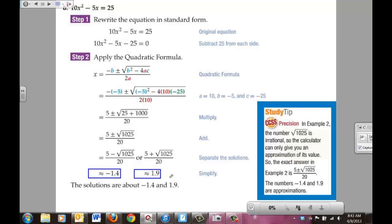A little study tip here. In example 2, the number √1025 is irrational, so a calculator can give you an approximation of its value. So the exact answer in example 2 is 5 ± √1025 all divided by 20. The numbers -1.4 and 1.9 are only approximations. Because this is an irrational number, you cannot get an exact answer. So if you want the exact answer, that's it. That's as close as you can get to writing an exact answer mathematically speaking. These other two values, the -1.4 and the 1.9, those are merely approximations of what the exact answer actually is.